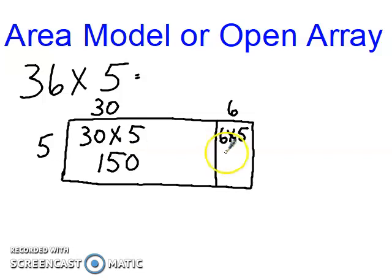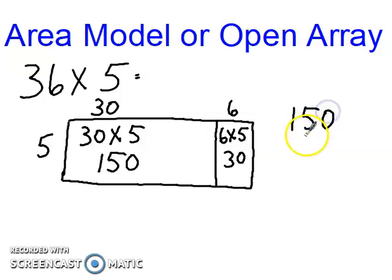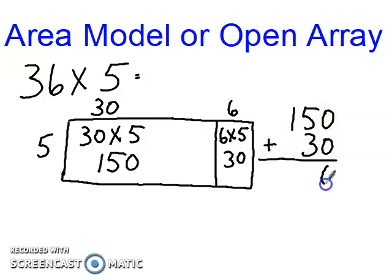Then 6 times 5 equals 30. The next step is to add these two partial products together: 150 plus 30. Zero plus zero is 0, 5 plus 3 is 8, bring down the 1 — so 36 times 5 equals 180.